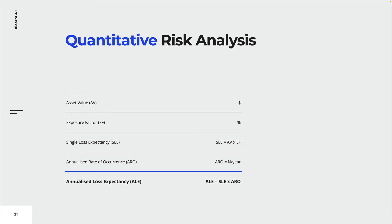The asset value represents the replacement value for the asset. The exposure factor is the financial loss that results from the realization of a risk, expressed as a percentage. The single loss expectancy (SLE) is calculated by multiplying the asset value with the exposure factor, representing the financial loss for each occurrence of the risk. The annualized rate of occurrence (ARO) describes the probability or likelihood of the risk and is usually expressed as times per year. The annualized loss expectancy (ALE) is the SLE multiplied by the ARO.